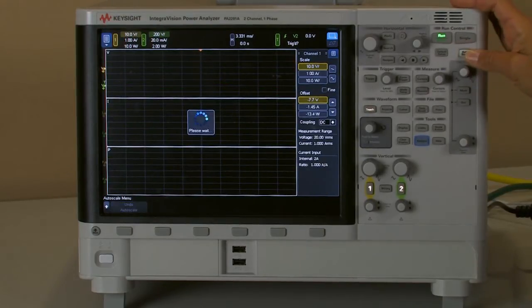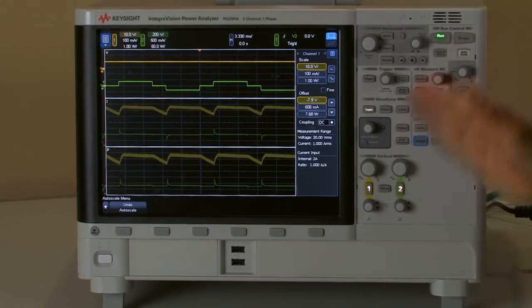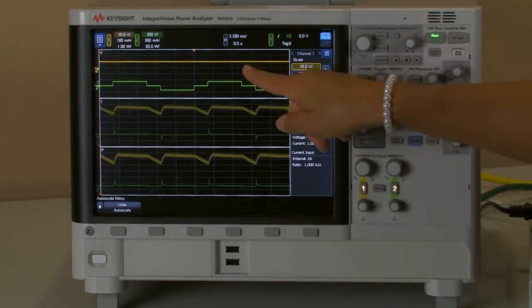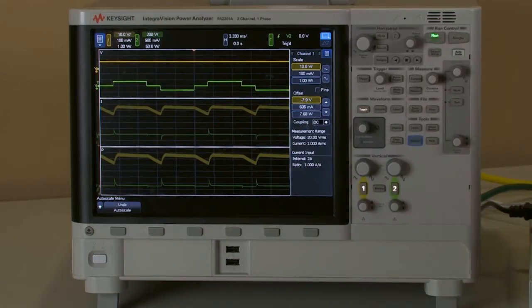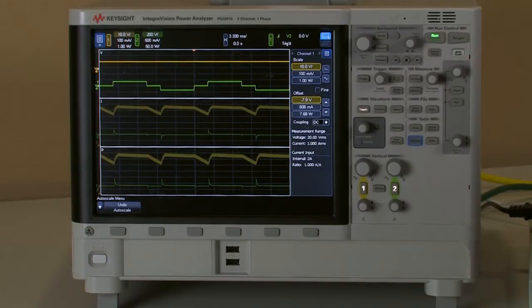It also helps to switch on the board. Now I can go to auto scale again. So the yellow as we started with that theme, yellow is the first channel, green is the second channel. On the first channel I have the DC signals. Obviously this is my DC voltage, this is my DC current and my DC power. On green that's my AC side.